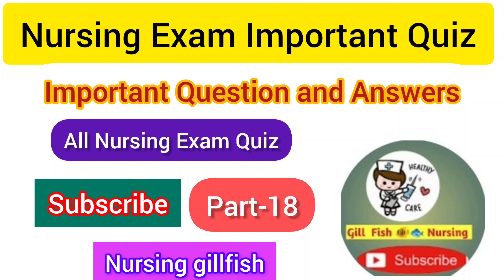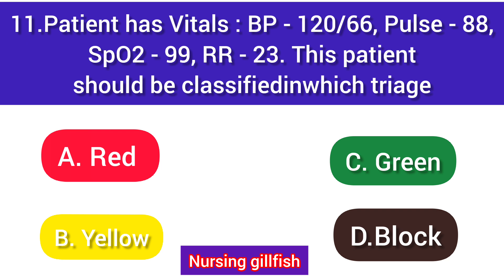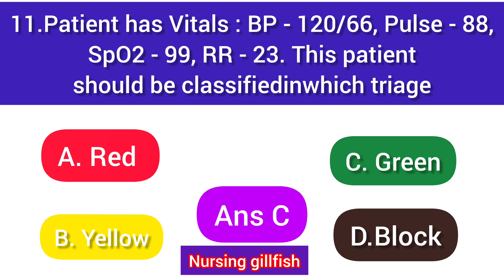Welcome to Zilfish. Today let's see the remaining question paper with all important questions. Question 11: A patient has vitals BP 120/66, pulse 88, SpO2 19, respiratory rate 23. This patient should be classified in which triage category? Option A: Red, Option B: Yellow, Option C: Green, Option D: Black. The correct answer is Option C - Green.